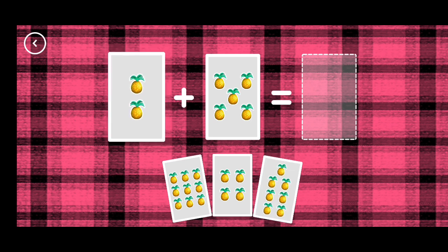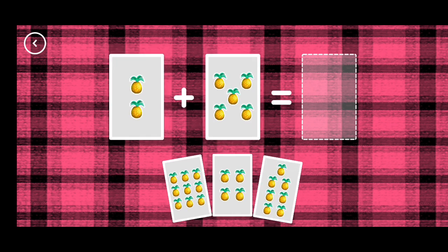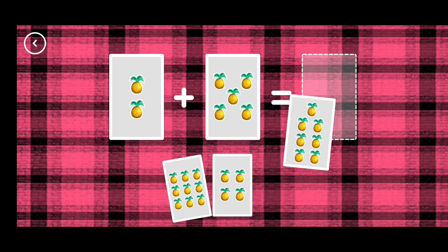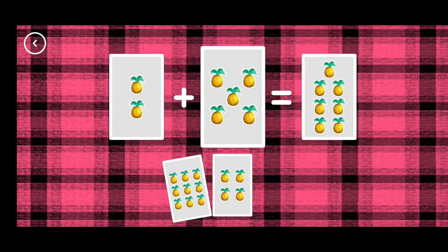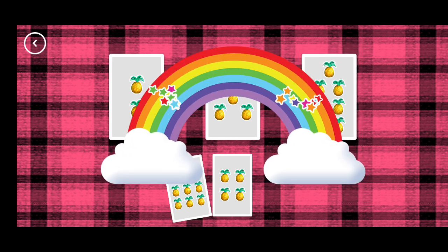If you start with this many and add this many, how many do you have all together? Seven. Two plus five equals seven. Correct!